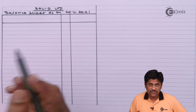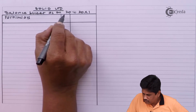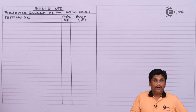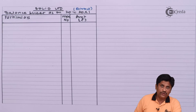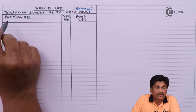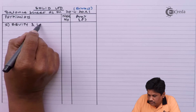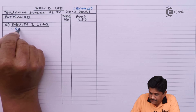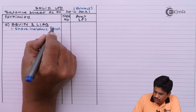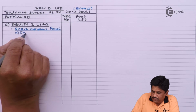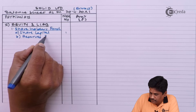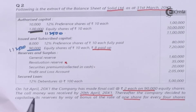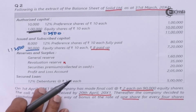Balance sheet of Solid Limited on 20th April 2000 X1, that is just after the bonus issue. Importantly it is not the full balance sheet — it is an extract; to the extent information is available we will note it down, otherwise we will ignore. First part — Equity and Liabilities. First heading: Shareholders' Fund — under which (A) Share Capital for which we will draw Note 1, (B) Reserves and Surplus for Note 2. Next: Non-Current Liabilities — Long Term Borrowings: 12% Debentures ₹5,00,000.